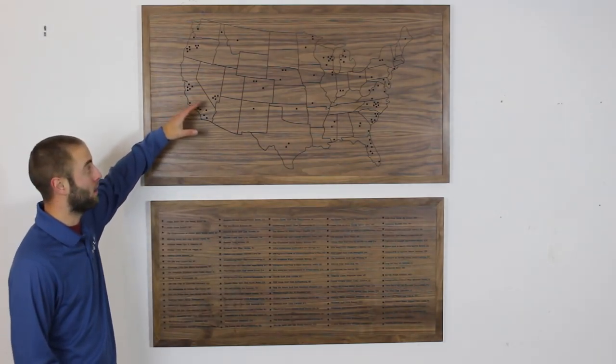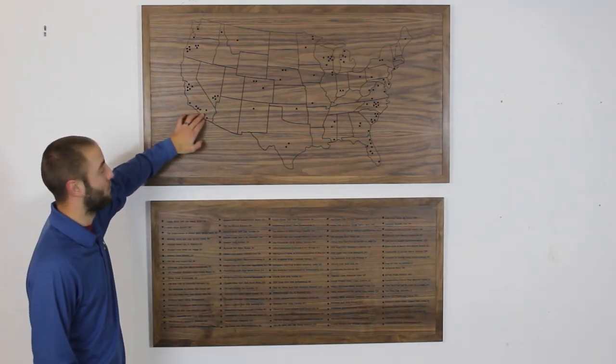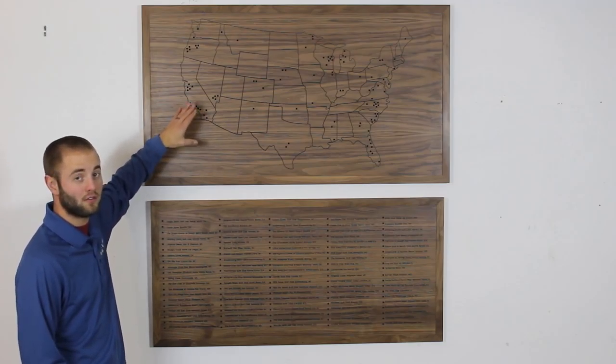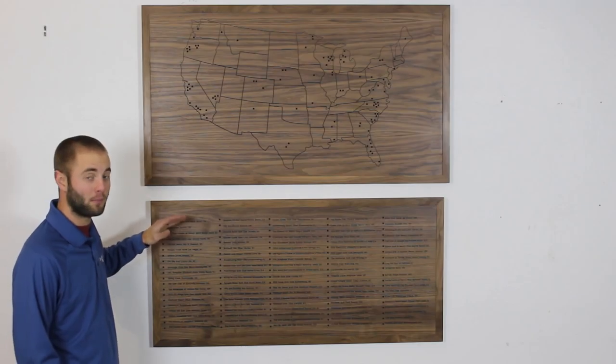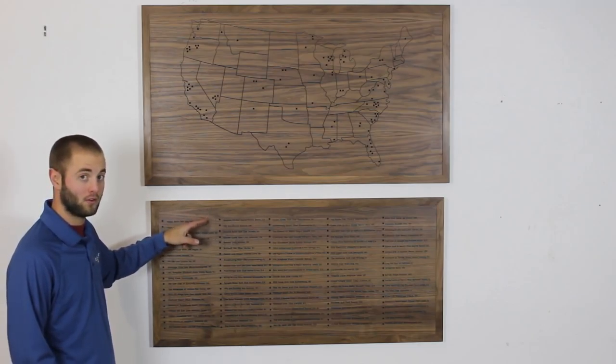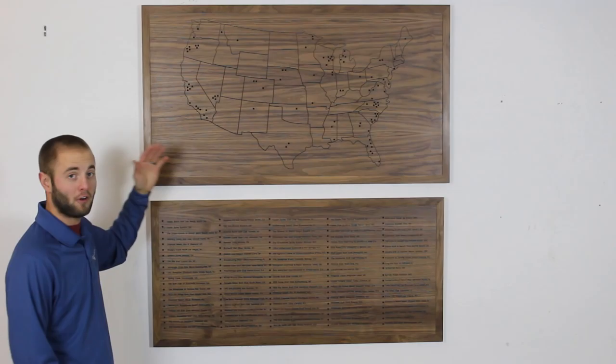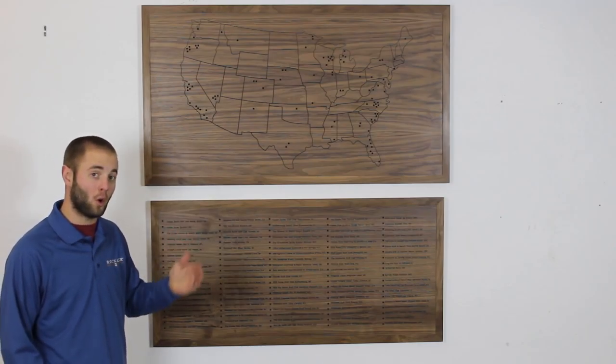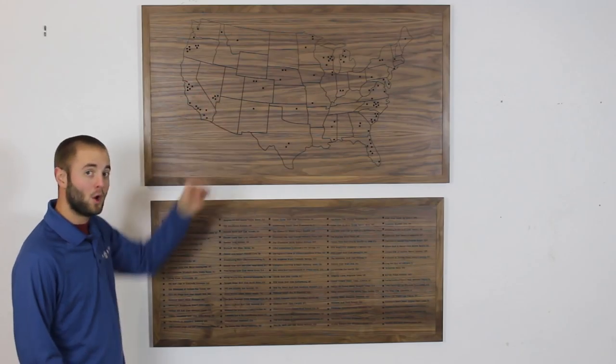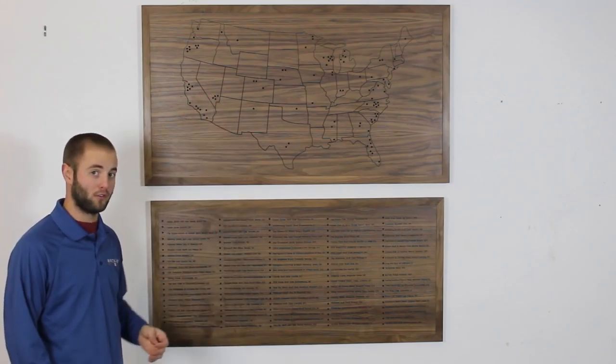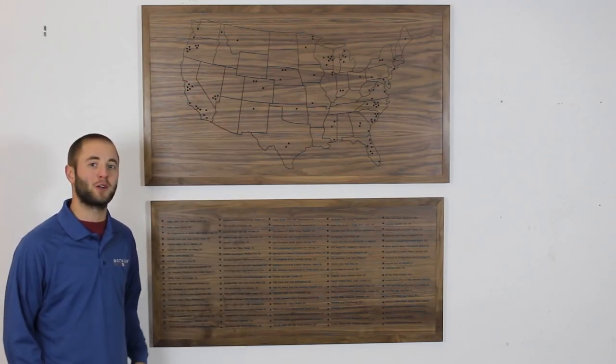The top section is a map of the lower 48 states with peg holes representing the location of each golf course. And the bottom section is a list of the top 100 public golf courses with matching peg holes. The idea is as the father and son combo golf each course, they pull the peg from the list and they'll place it on the map representing that they've golfed that course. So let's head into the workshop and I'll show you how I made it.